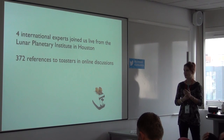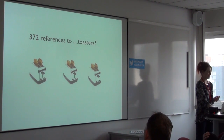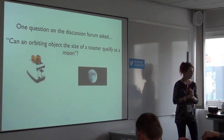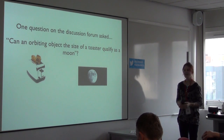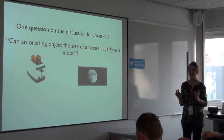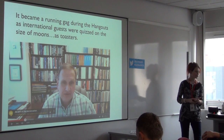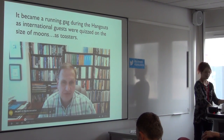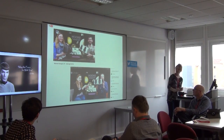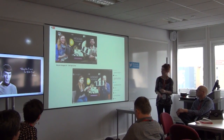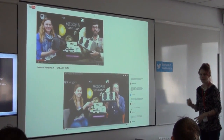The most interesting thing was that we had 372 references to toasters. What is that all about? Basically, it came from a question on the forum asking whether an orbiting object the size of a toaster could qualify as a moon. This got everybody's attention, and we put it to one of the experts as well. It became a running gag during the Hangouts as guests were quizzed. The quality was pretty good, actually — we were quite impressed.